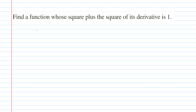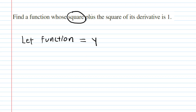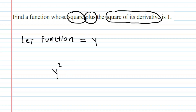Here we need to find a function whose square plus the square of its derivative is equal to 1. Let's begin by letting our function equal y. The square of our function would be y squared, plus the square of the derivative. If our function is y and we take the derivative with respect to x, our derivative would be annotated as dy/dx. Don't forget to square that, because it's the square of the derivative. This is all going to equal 1.